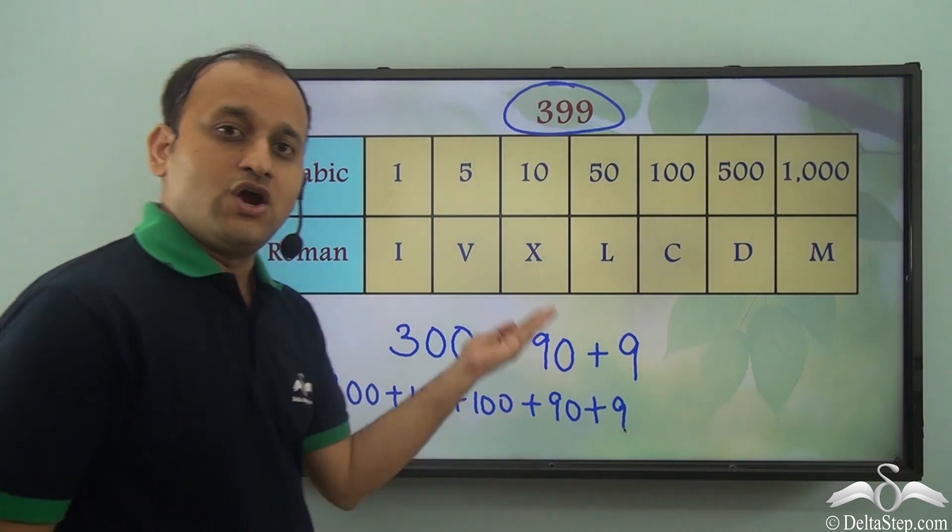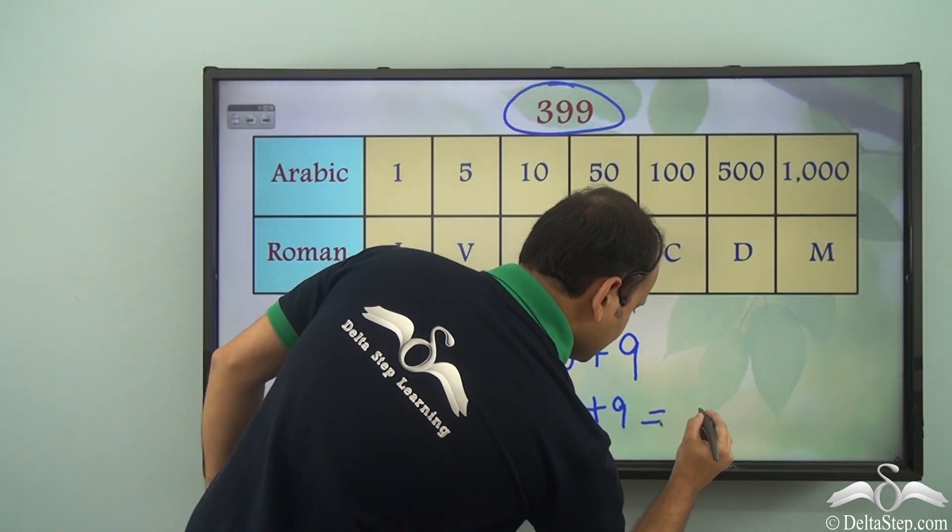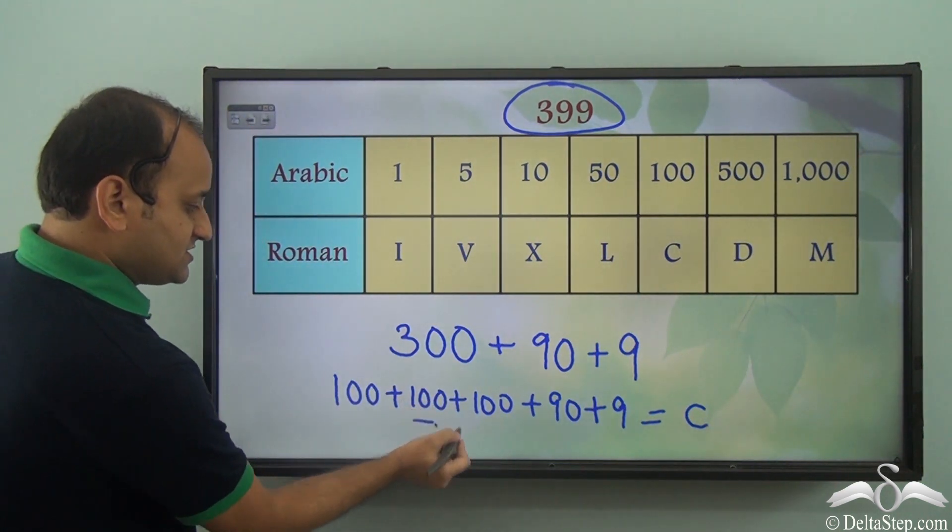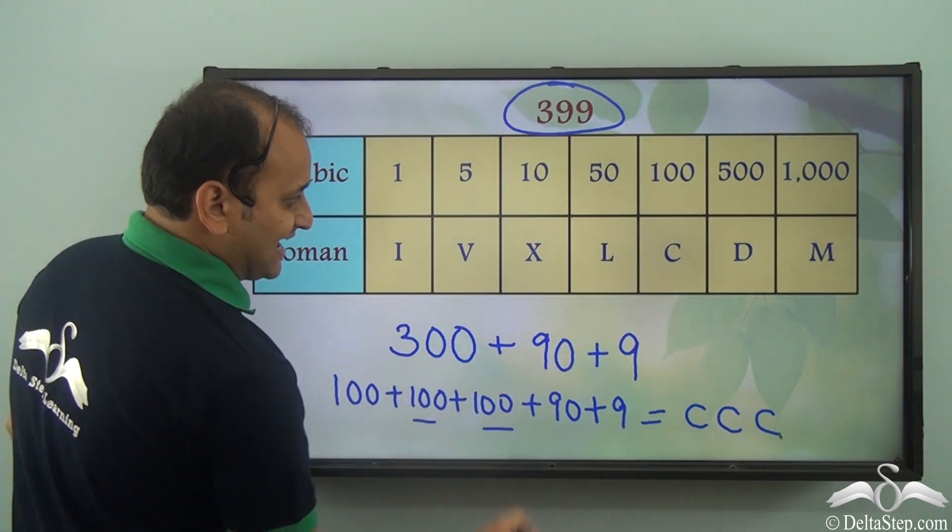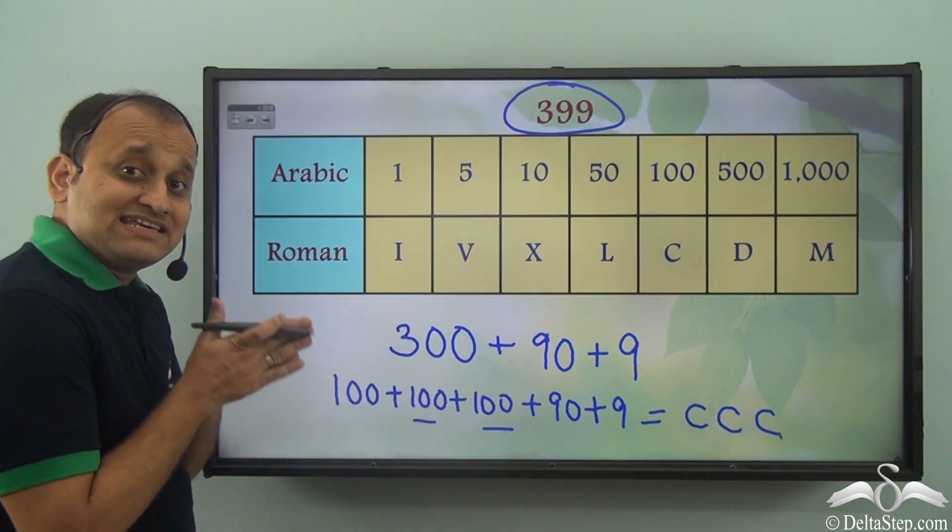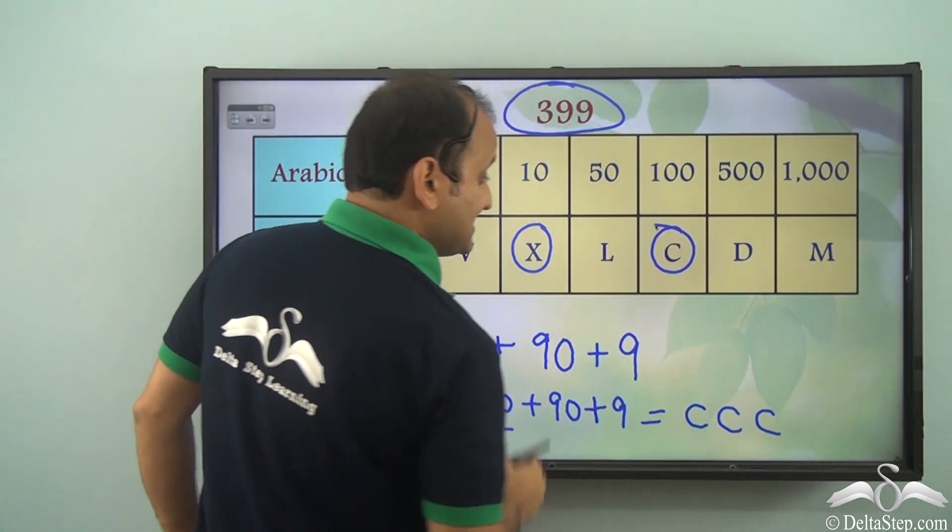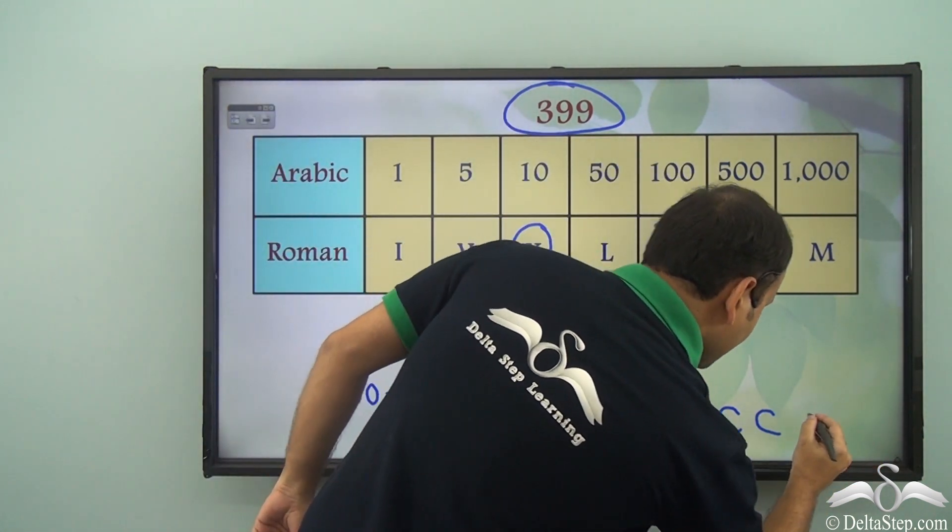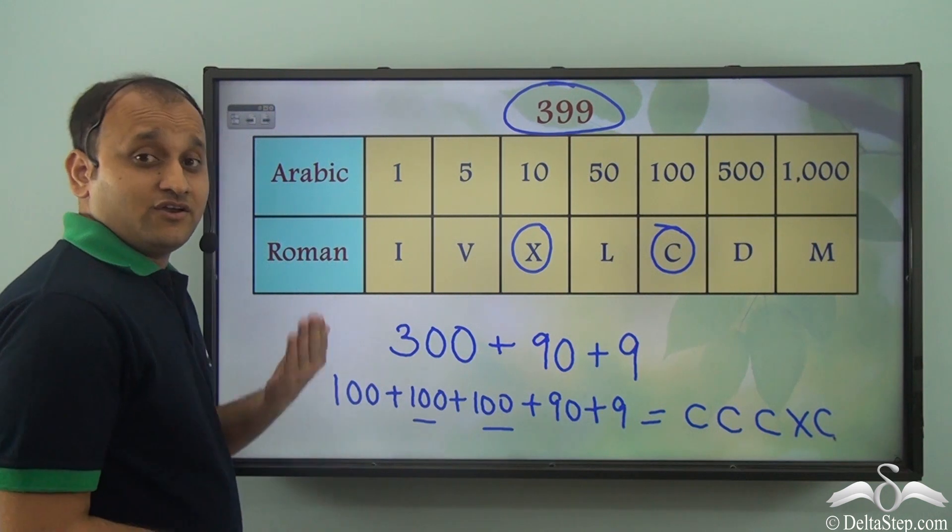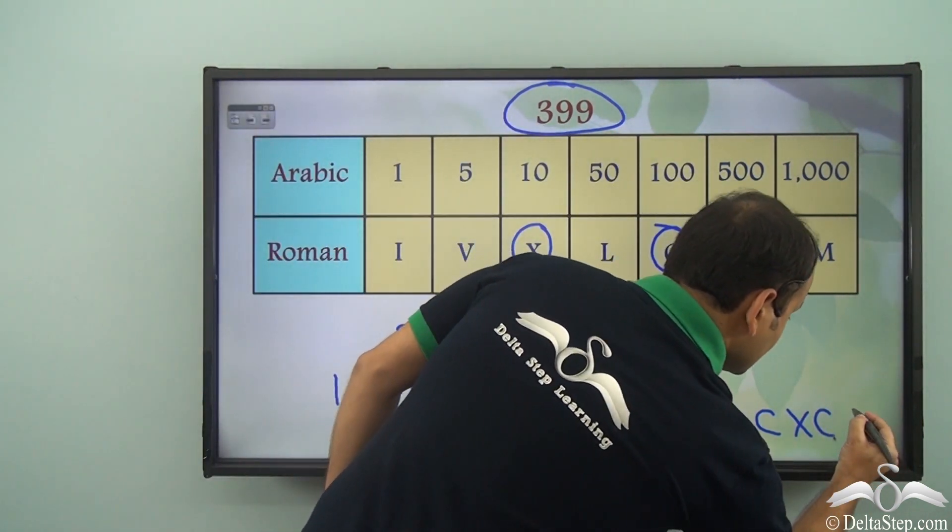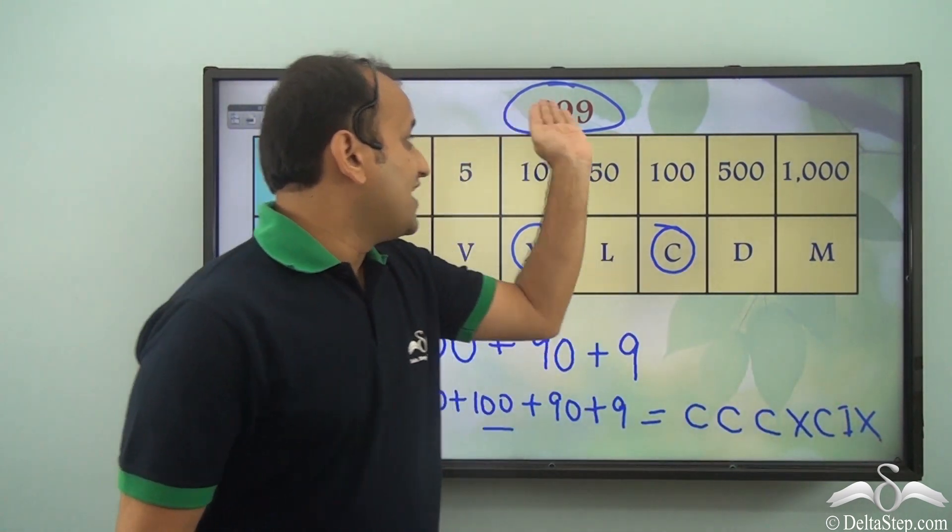Now this in Roman numeral form will be, well we know 100 is C. So we can write this as C, another C, another C, and then we have 90. Now how do we write 90? 90 is nothing but 10 less than 100. So it means we will place an X before C, that is 10 before 100. So it will be 90, and then we have a 9. How do we write a 9? 9 is 1 less than X.